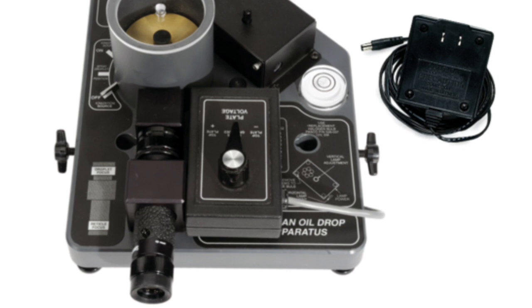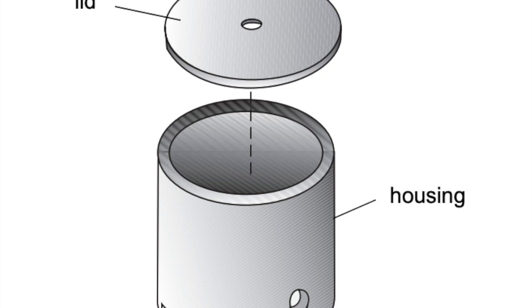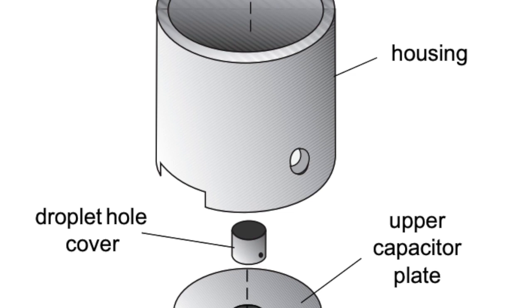The components of the droplet viewing chamber are a lid, clear plastic chamber cover, housing, convex lens, not showing, in here, droplet hole cover.